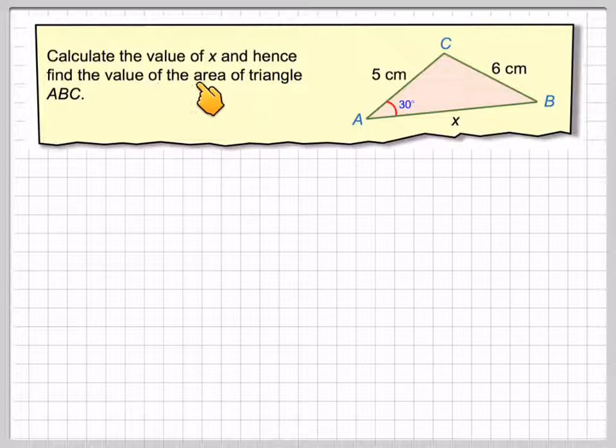Calculate the value of x and hence find the value of the area of triangle ABC. So we've got 5, we've got this one as x, we've got 6.